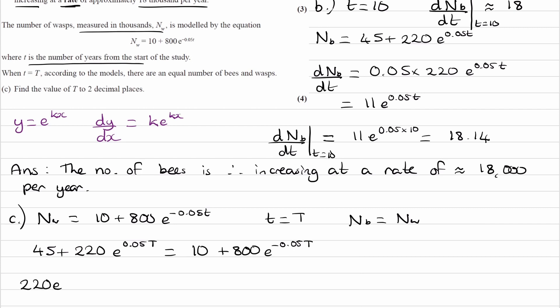So 220 e to the 0.05T, bring the 10 over so that becomes plus 35, and then we have minus 800 e to the minus 0.05T equals 0.